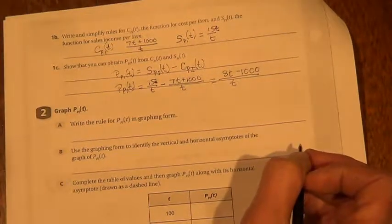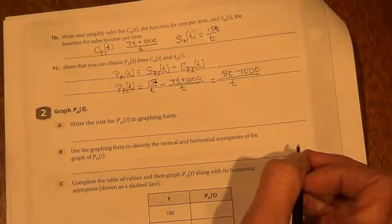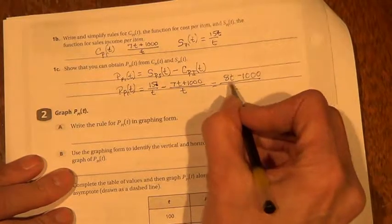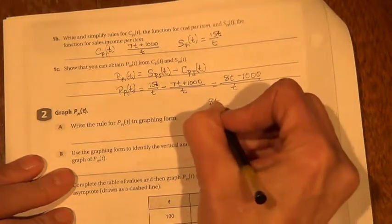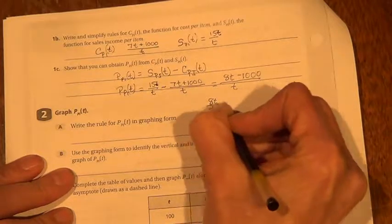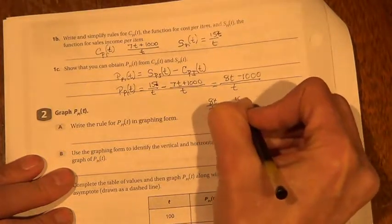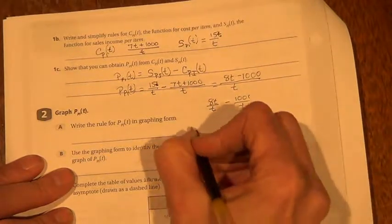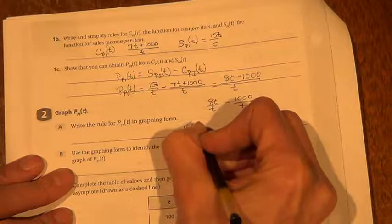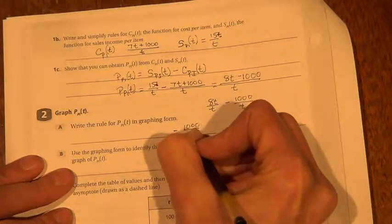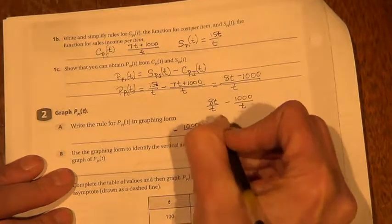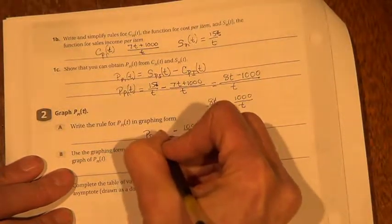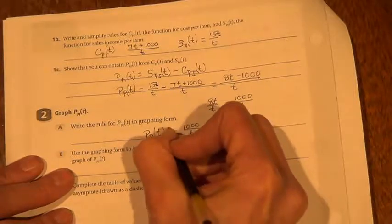Now it says, write the rule for profit per item t in graphing form. So we would actually distribute that t, as I've shown you to do when you're graphing these, under each, and we would see that we have a negative 1,000t plus 8. That's P of I of T.